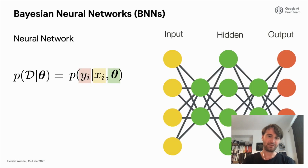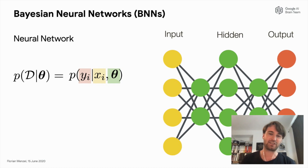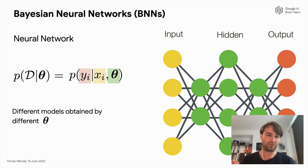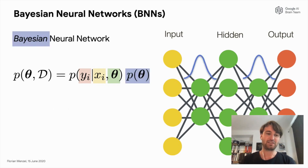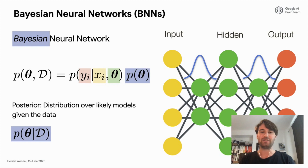What is the Bayes posterior in deep nets? Let's start with a standard neural network. We typically parameterize a likelihood function by some parameter theta given by a deep net. For example, for classification we would use a categorical likelihood given by a softmax. For different thetas we obtain different models. In a Bayesian neural network, we consider a distribution over all those parameters, and we are interested in the posterior — the distribution over all likely models given the data.